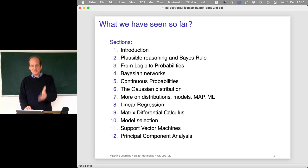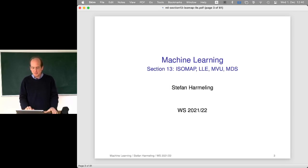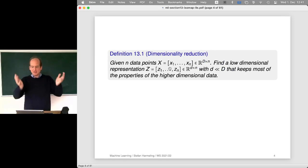We've seen this slide already many times. We are still in the section on nonlinear dimensionality reduction — today's section 13. Dimensionality reduction is the task of having a cloud of points in some high-dimensional space and looking for a low-dimensional representation. Ideally it is much lower-dimensional than the high-dimensional data. This is a very general problem in machine learning.